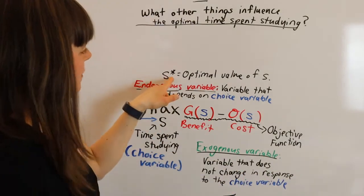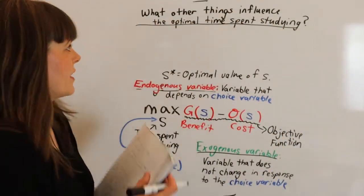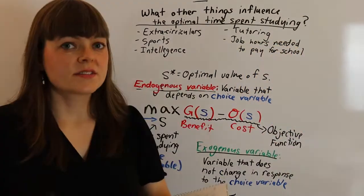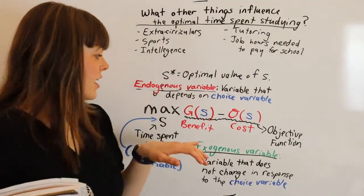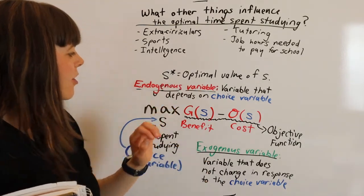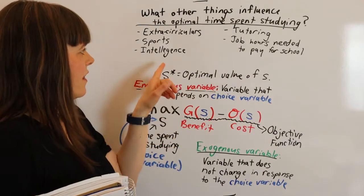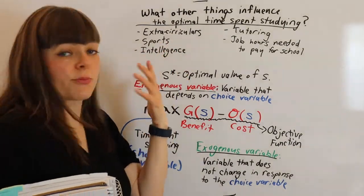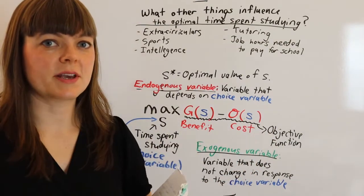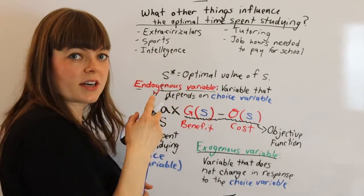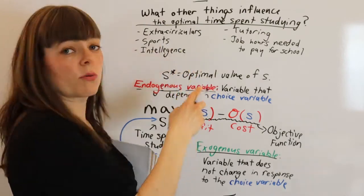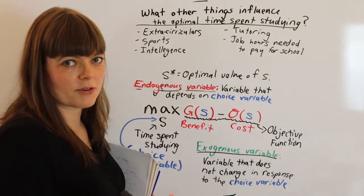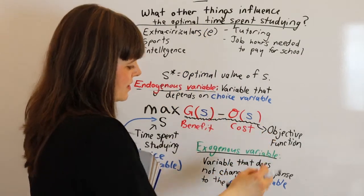Okay. So what other things influence the optimal time spent studying? So we might have something like the number of extracurriculars a student is involved with. So all of these are things that could come into a student's life that are going to influence the optimal value of S. And however, in our initial model, when we change S, intelligence does not change. When we change S, sports participation or sports commitments don't change. So because of that, these are going to be exogenous variables and we're going to stick them inside our objective function in some way. Now here, it's pretty easy to see with the ones I've come up with where they would fit. For example, extracurriculars, if you're committed to more extracurriculars, that's going to influence your opportunity cost. So I'm going to let this one be E and I'm going to stick it inside this function.